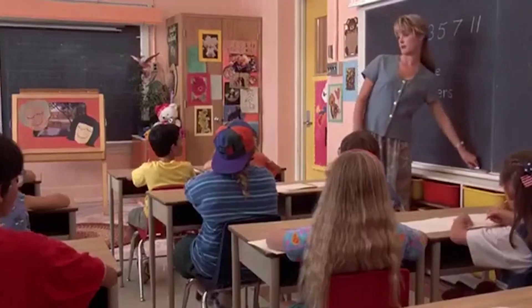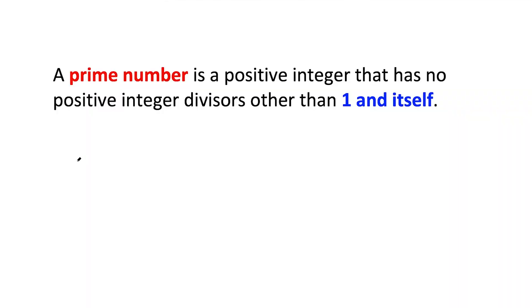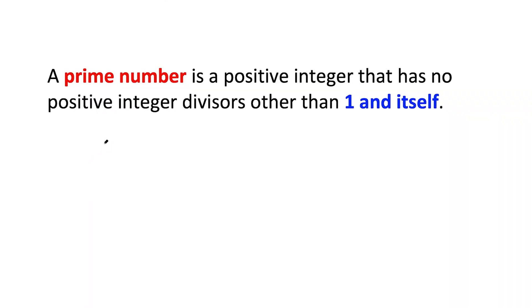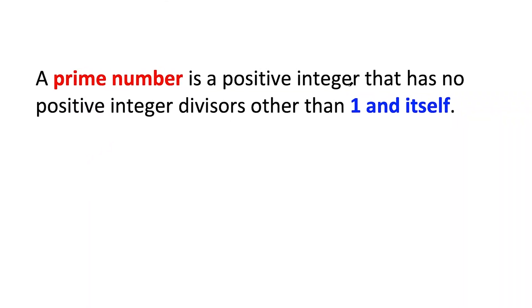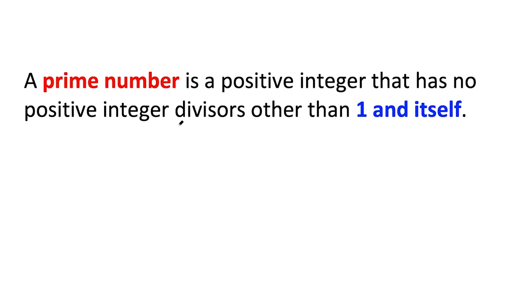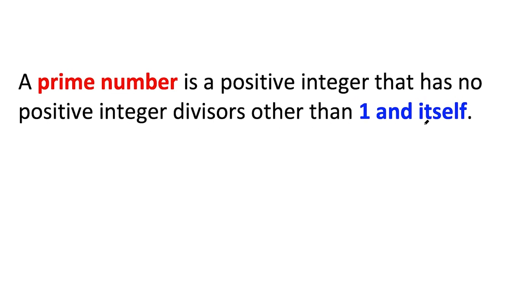Try to find the mistake in this scene from Billy Madison. Before we jump into this movie mistake, we have to know that a prime number is a positive integer or whole number that has no positive integer divisors other than 1 and itself.